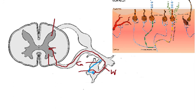The postganglionic fiber again enters the trunk of the spinal nerve by using the grey rami communicants. This color is grey because the postganglionic sympathetic fiber is unmyelinated, so the color of the grey rami communicants is grey due to the unmyelinated fiber.